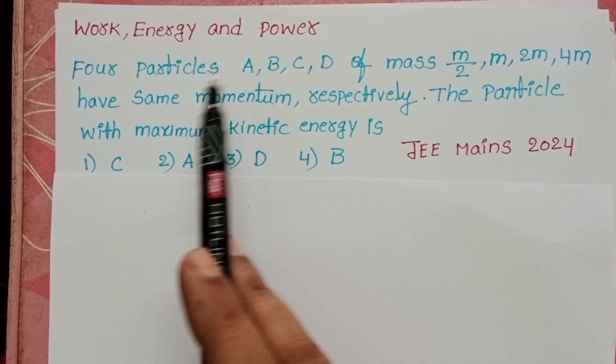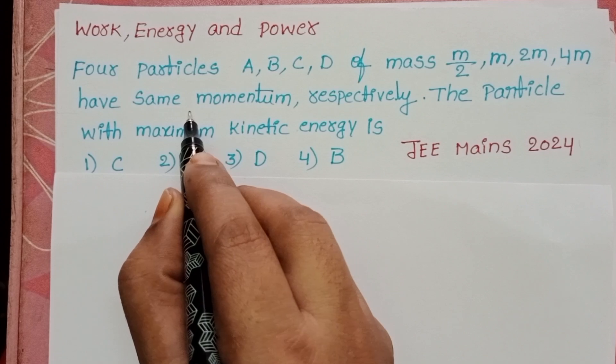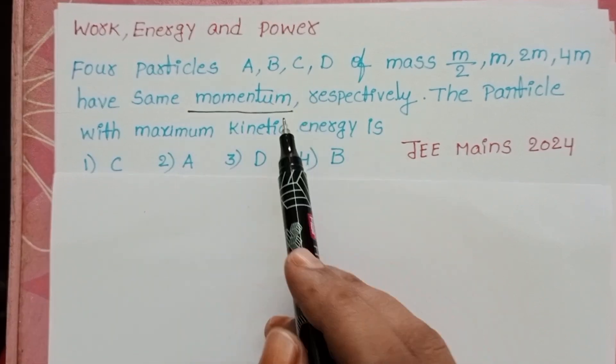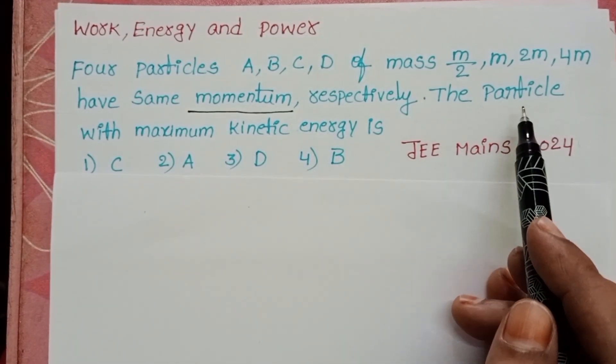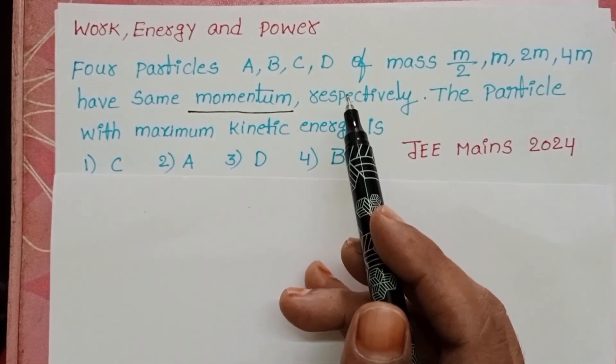In this question, four particles have different masses but the same momentum. By using this, we have to find out the particle which has the maximum kinetic energy.